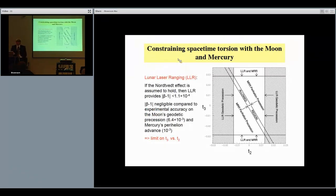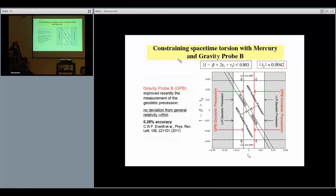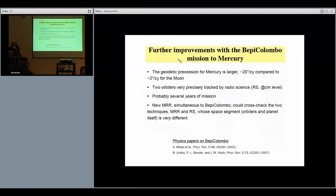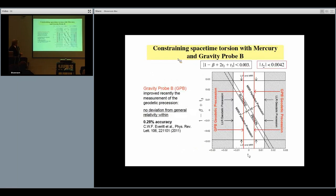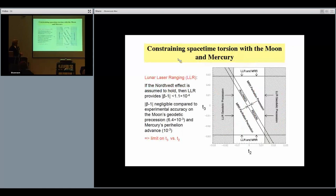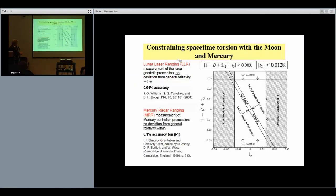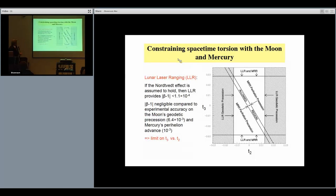Using the lunar ranging data, we can also constrain another important effect called the Nordtvedt effect, in which case beta, which is not a torsion parameter but a PPN parameter, is then constrained at the level of 10 to the minus four. If we do that, then beta minus one is less than 10 to minus four, so we can neglect it from this expression here compared to the experimental uncertainties. Then we get a limit which is a limit on t3 and t2 without beta.